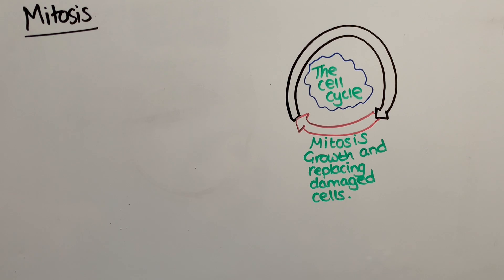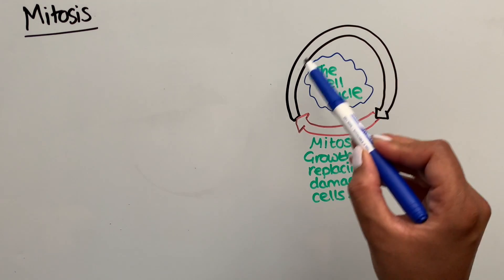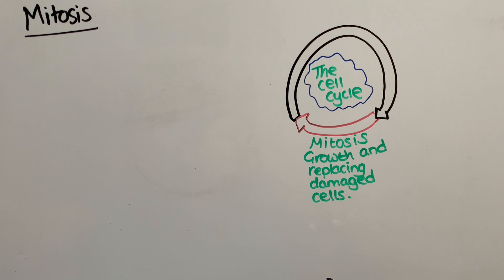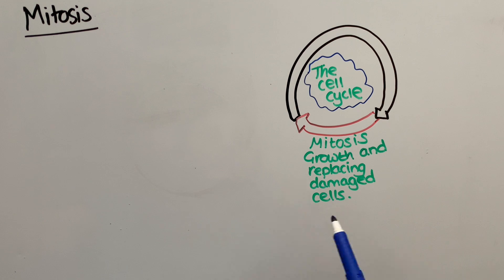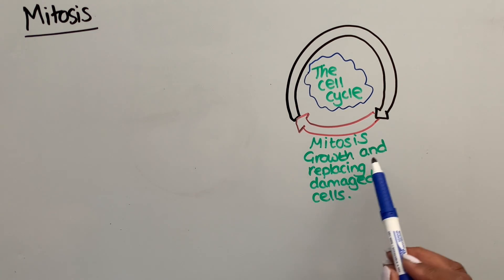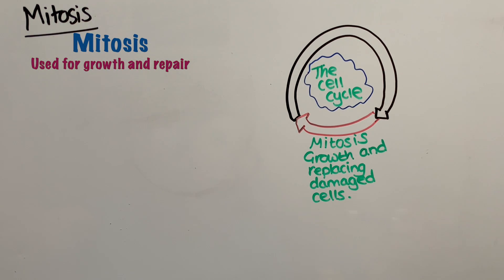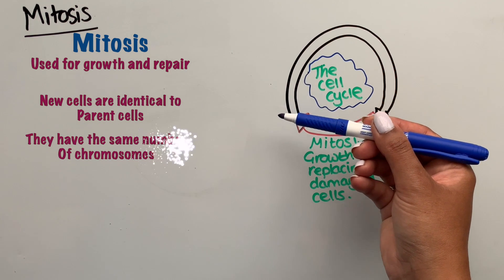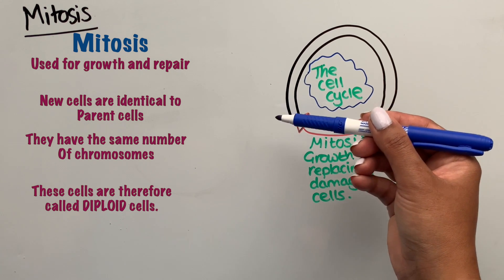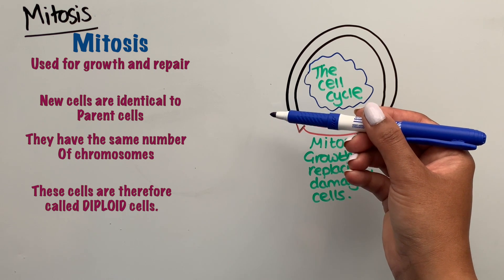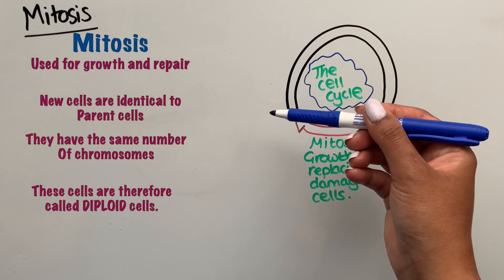When these cells divide, they divide through the process called mitosis. New body cells in multicellular organisms are produced by a series of stages called the cell cycle. The stage where cells divide is called mitosis, and multicellular organisms use mitosis to produce new cells for growth and replacing damaged cells. We end up with cells which are identical, with identical numbers of chromosomes to the parent cell. These daughter cells are called diploid cells, meaning they have the same number of chromosomes as the original parent cell.